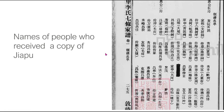Next we have the list of names of people who received a copy of the Jiapu, where they live, including which family they are from. For example, 'Hui Gong Zhang Fang' meaning the first wife of Hui Gong — this is their family, the names, and in parentheses the locality of these people. 'Hui Gong E Fang' is from the second wife of Hui Gong — the names and the locality.